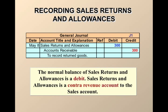For sales returns and allowances, we actually use the sales returns and allowances account as a debit. The normal balance of sales returns and allowances is a debit. It is a contra-revenue account. As you know, revenues have a normal credit balance. And of course, when someone returns something, we need to decrease the amount of money they owe us, so we're going to credit accounts receivable.